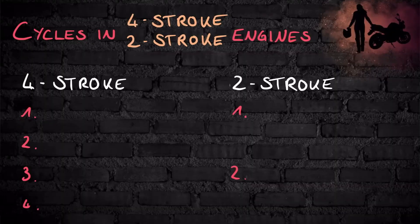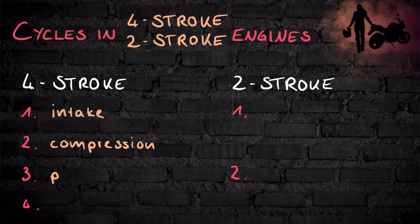One stroke is the piston moving either up or down inside the cylinder. One cycle is everything an engine does before it repeats the same steps. The four strokes in a four-stroke engine are called the intake stroke, compression stroke, power stroke, and exhaust stroke.